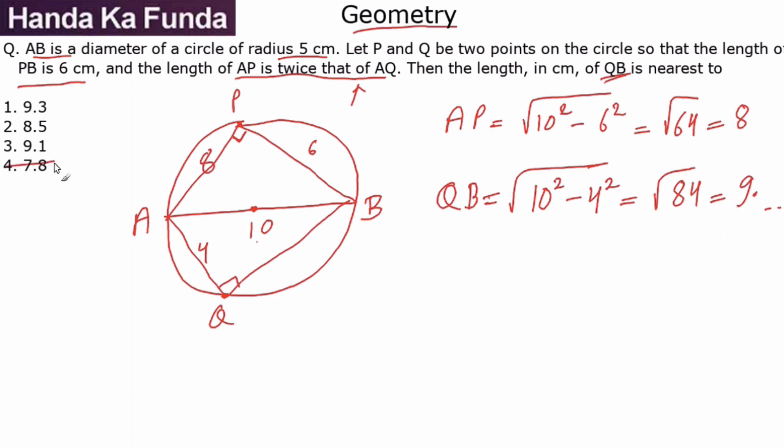Let's look at the options. 7.8 and 8.5 are very clearly ruled out. Among 9.1 and 9.3, I would say that 9.1 is closer to 9. 84 is closer to 81 and that would mean that 9.1 is my answer. If you don't want to approximate, you can use a calculator and find out the square root of 84. But since 9.1 and 9.3 are quite far apart, I have to take a value which is closer to 9, I can easily approximate this as 9.1, making that as an answer.